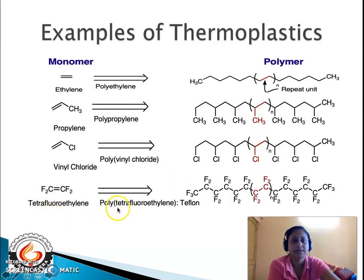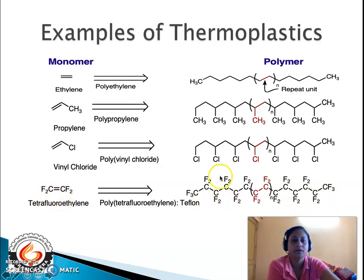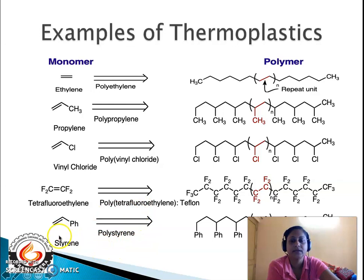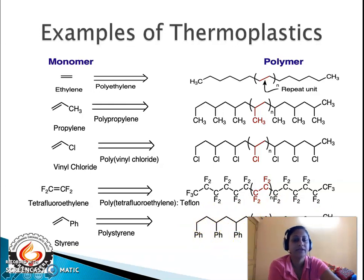The fourth thermoplastic example is polytetrafluoroethylene (PTFE), commonly called Teflon. Its monomeric unit is tetrafluoroethylene, which has a carbon-carbon double bond with fluorine atoms as side groups. It undergoes addition polymerization to give the Teflon polymer. The fifth example is polystyrene, formed from styrene — which has a double bond and a phenyl side group. Styrene undergoes addition polymerization to give polystyrene, with phenyl groups attached to the main carbon chain.